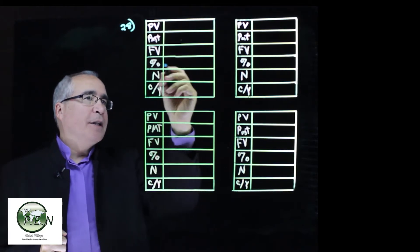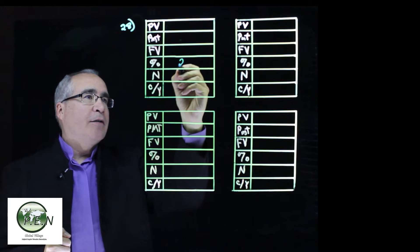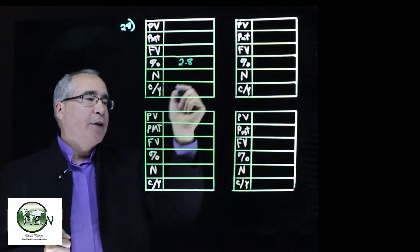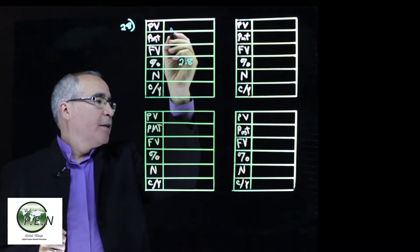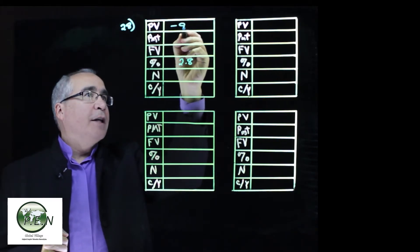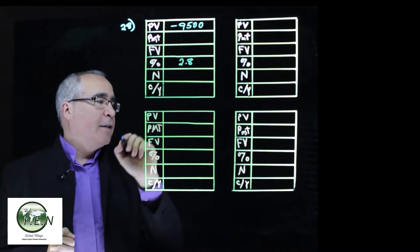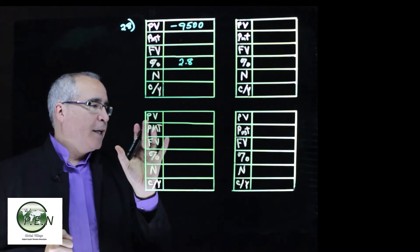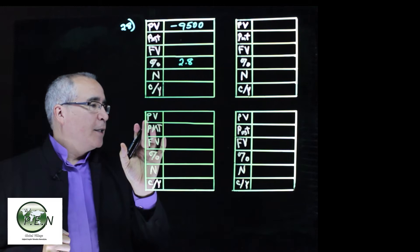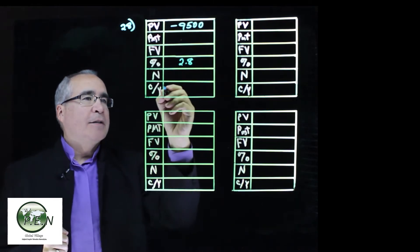We're getting 2.8% is the stated rate. 2.8 goes there. He deposits, Devin deposits 9,500, so that's a negative value going away from him. How much money will Devin have in the account in one year? Let's see, compounding monthly, so that's important.